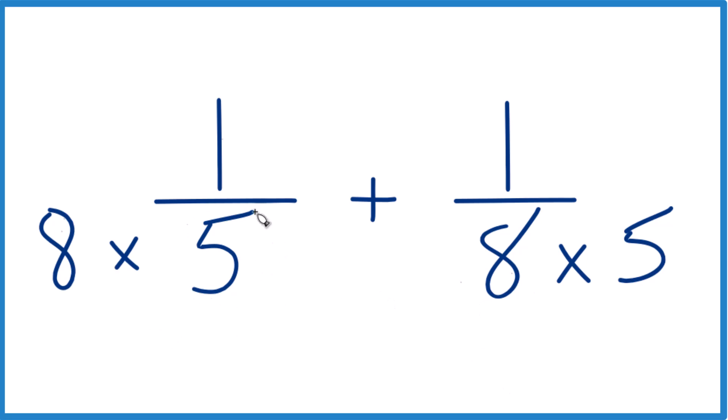But we can't just multiply the denominator by a number. We need to multiply the numerator as well. So let's say 8 times 1 here. 8 over 8, that's just 1. So we're multiplying by 1. We don't change the value, just how it's represented. Over here, let's multiply by 5.